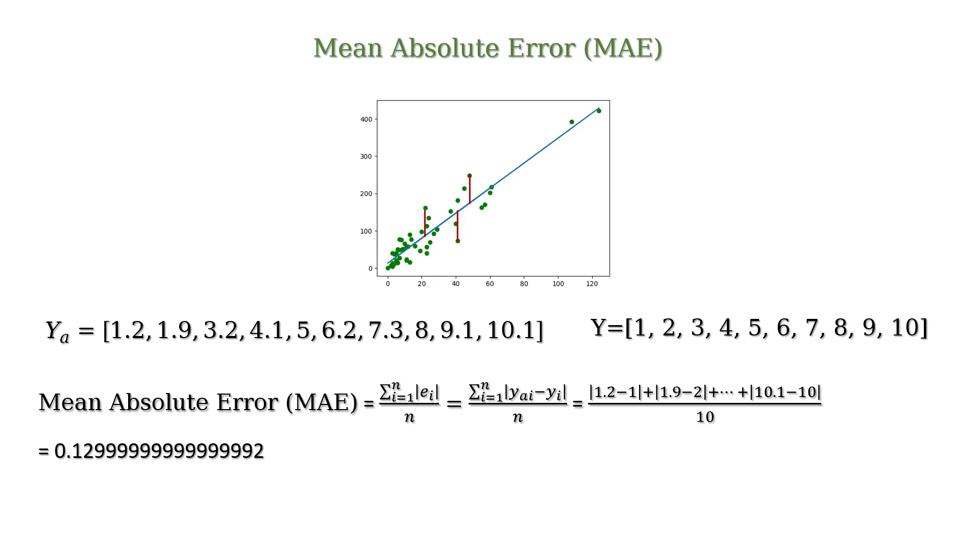The mean absolute error will be MAE is equal to summation from i equals 1 to n of absolute value of ei divided by n and that will be equal to 0.129 after calculation.